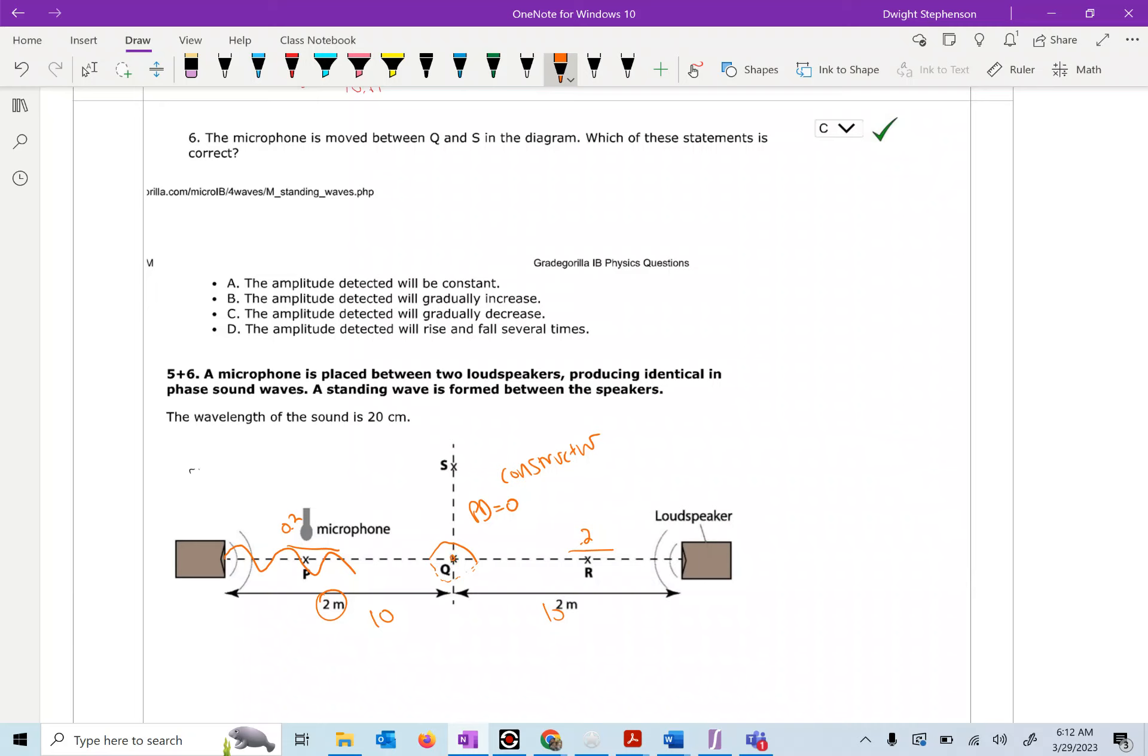If you go over from this point, 10 centimeters, then this wave will have traveled 2 meters, and it's like 2.1 meters. Maybe it's not 10. Let's see. And this wave would have traveled 1.9 meters.